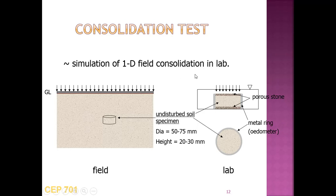The 1D field consolidation is simulated in the lab using an oedometer. An undisturbed soil specimen is placed between porous stones above and below, and loaded vertically. The oedometer diameter is 50–75 mm and sample height is 20–30 mm. Load is applied in increments, then the specimen is unloaded and finally reloaded.